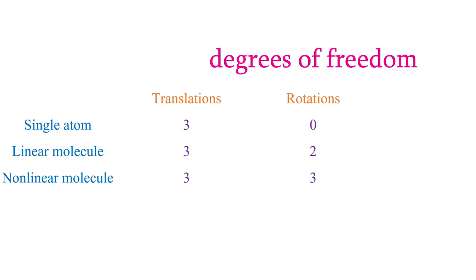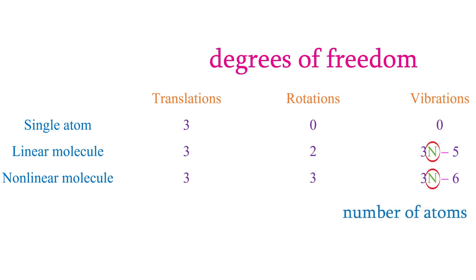What about vibrational degrees of freedom? There are no vibrational degrees of freedom for a single atom because there aren't any bonds that could vibrate. For linear molecules, there are 3n−5 possible vibrations, and for nonlinear molecules there are 3n−6 vibrations, where n is the number of atoms in the molecule.